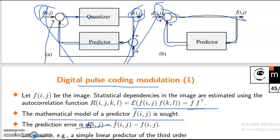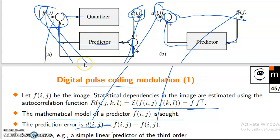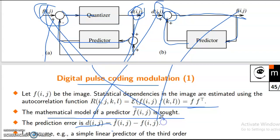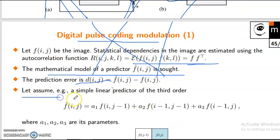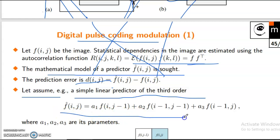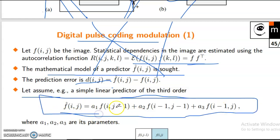The prediction error is p(ij) equal to tf(ij). tf(ij) equals f-cap(ij) minus f(ij). Let us assume an example: a simple linear predictor of the third order. f-cap(ij) equals a1·f(i, j−1) plus a2·f(i−1, j−1) plus a3·f(i−1, j), where a1, a2, a3 are the parameters.